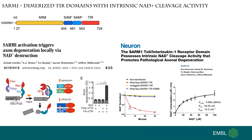Later on, others were found, and this enzymatic activity was shown to be performed by the TIR domain and is auto-inhibited by the ARM domain. So we have the auto-inhibitory ARM domain, the enzymatically active TIR domain, and in between there are two SAM domains which are important for dimerization.